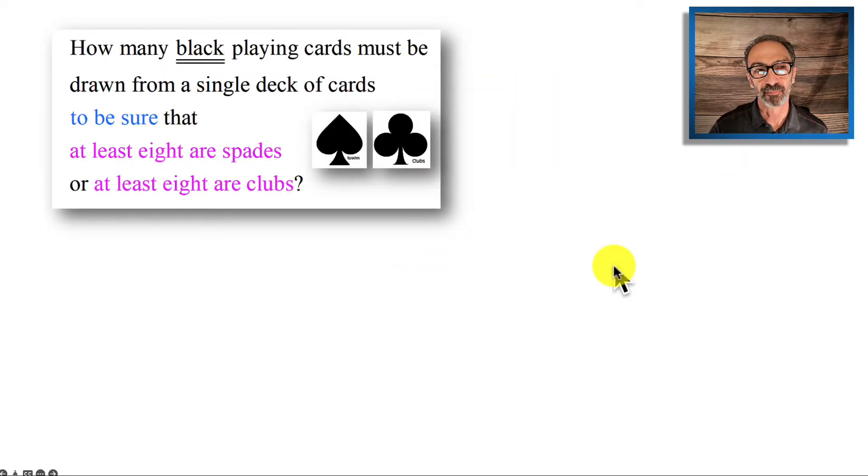That's the problem and that's the formula. We know m is the number of holes, n is pigeons. K is the restriction or the number that we are seeking: at least eight spades or at least eight clubs. Those are the spades and those are the clubs. So k is eight.